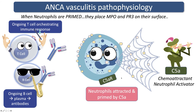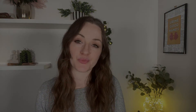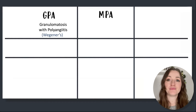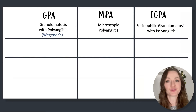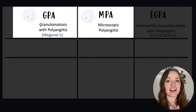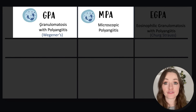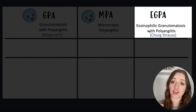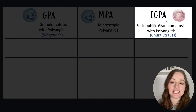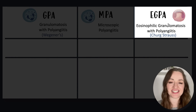ANCA vasculitis can be extreme and very nasty. You're probably aware that ANCA vasculitis has a few different clinical phenotypes. We have GPA — granulomatosis with polyangiitis — MPA — microscopic polyangiitis — and eosinophilic granulomatosis with polyangiitis. GPA and MPA have neutrophils at their centre, so everything I just showed you very much applies to those conditions. Whilst eGPA, on the other hand, is a very similar process, but this time eosinophils are at the centre.